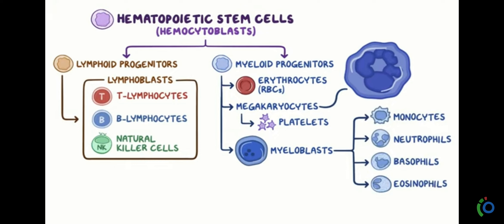The hematopoietic stem cells, or HSC, are cells which are formed or produced in the bone marrow. Hematopoietic stem cells are formed in bone marrow and they produce two different types of cells: firstly, lymphoid progenitors and myeloid progenitors.